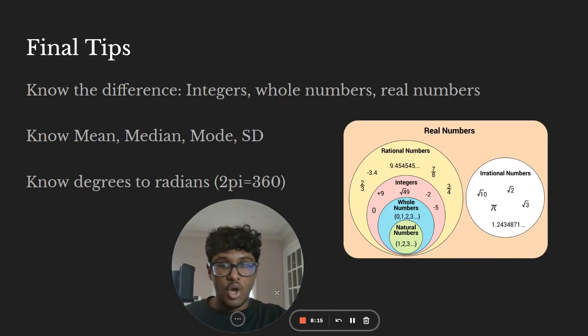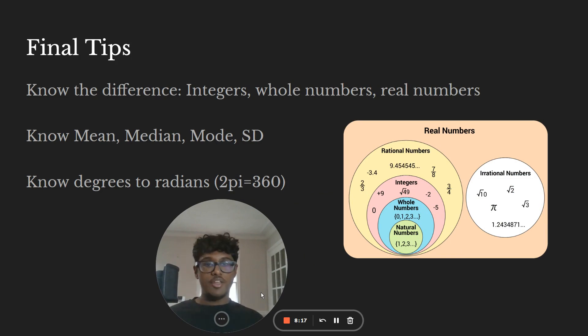Here's some final tips. Know the difference between integers, whole numbers, real numbers. I have this diagram here on the right that simplifies it pretty quickly. Those are all rational numbers, all fractions, negative numbers. Integers is zero, negative, positive numbers. Whole numbers is just zero and all the positive numbers, the whole ones. And then natural numbers is just all whole numbers except zero. Every single natural number is a rational number. It's a basic Venn diagram. And you also have irrational numbers. You need to know the difference.